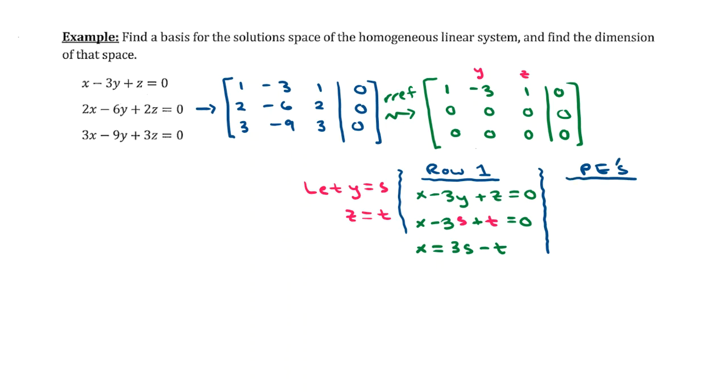So what we'll do is hone in on row 1 and write row 1 in equation format. Row 1 says that x minus 3y plus z is equal to 0. But of course, we're going to replace y and z with their parameters. So x minus 3s plus t is equal to 0. And now what I'll do is just go ahead and solve for x by moving the second and third term over to the right-hand side. So x is going to equal positive 3s minus t.